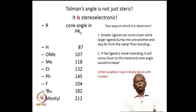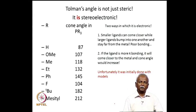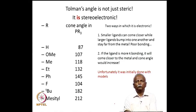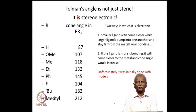Tolman's cone angle is very important, but we must realize it also has a stereoelectronic influence. If you have four small ligands around the metal, they can approach the metal much more closely, shortening the metal-ligand bond distance. At the same time, this closer approach automatically increases the cone angle — a small ligand can paradoxically exhibit a larger cone angle because it coordinates more tightly to the metal.